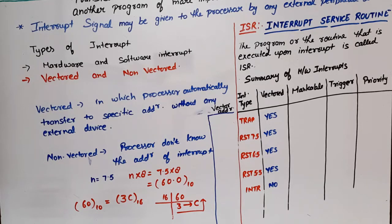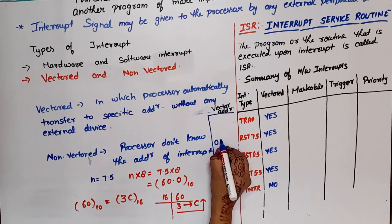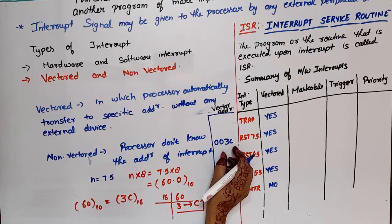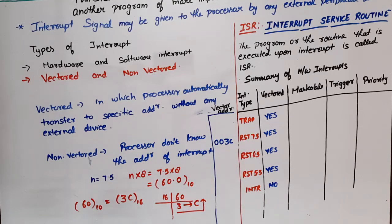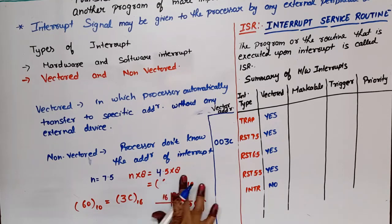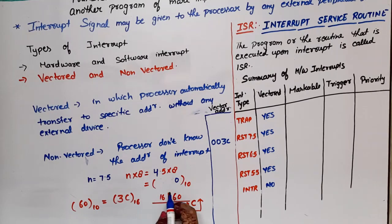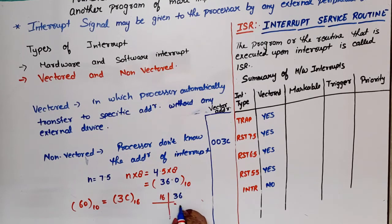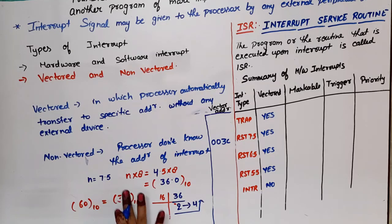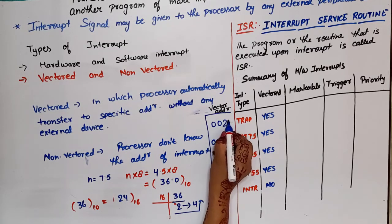The address for RST 7.5 is 003C — the processor will jump to 003C when RST 7.5 occurs. For TRAP, we take n = 4, so 4 × 8 = 32, plus 4 = 36 in decimal. Converting 36 to hexadecimal gives quotient 2 and remainder 4, so the address is 0024.